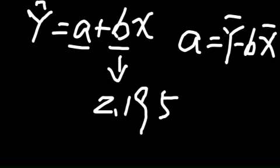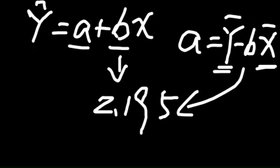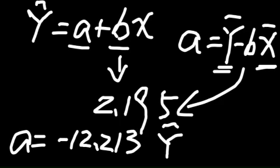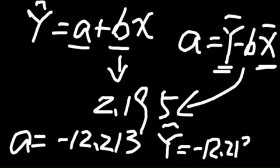A comes from Y bar minus B times X bar. So you calculate the mean of your contacts, that is X bar. And Y bar is the mean of your sales. And B you already know. So you get your A is minus 12.213. Your final equation should be Y hat equals minus 12.213 plus 2.195 times X.